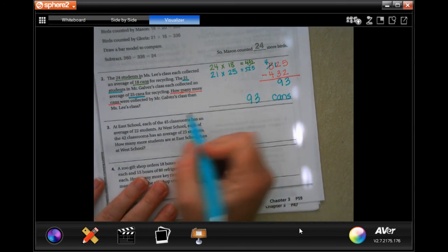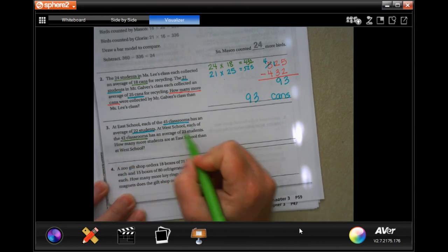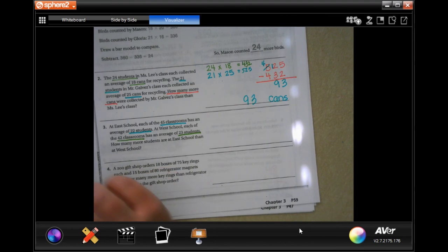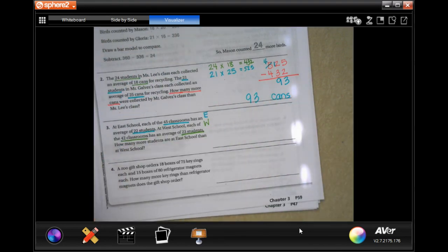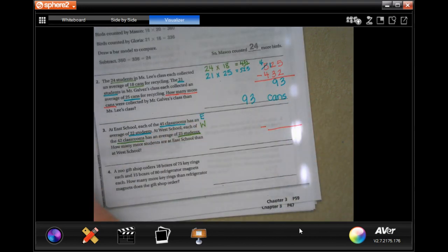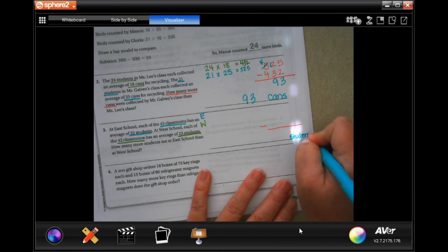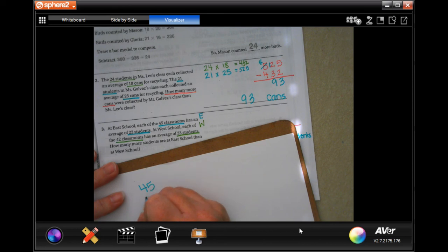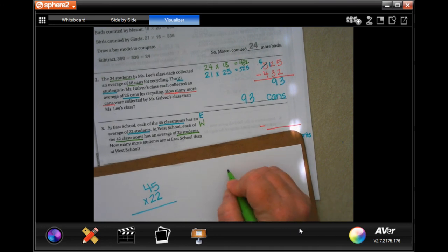At each school, each of the 45 classrooms has 22 students. At west school, each of the 42 classrooms has 23 students. How many more students are at east than at west? So east and west. And then whatever those are, I need to subtract to find the difference. But whatever it is, it's going to wind up being in students. So east has 45 classrooms with 22 students, and west has 42 classrooms with 23 students. All right, let's do some math. Ready?